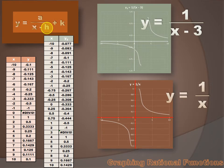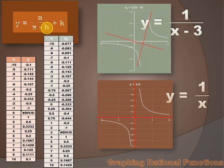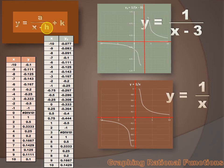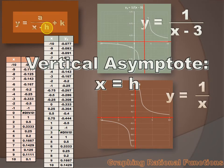Our vertical asymptote has been moved 3 units to the right. Our h equals 3. It's x minus h, and over here it's x minus 3, so our h value is 3 — positive 3, not negative 3. And our vertical asymptote is positive 3. That will always be the case — that h value will slide our graph to the right or to the left. And our vertical asymptote will always be x equals h.